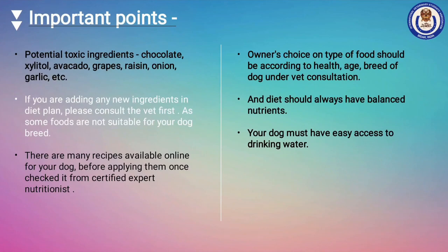A few conclusive points to remember: If you are adding any new ingredients to the diet plan, please consult your vet first, as some foods are not suitable for your dog's breed. There are many recipes available online — before applying them, check with a certified expert nutritionist. Potential toxic ingredients that should be avoided include chocolate, xylitol, avocado, grapes, raisins, onion, garlic, and many others. Your dog must have easy access to drinking water, and always try to give a balanced nutritional diet under vet recommendation.